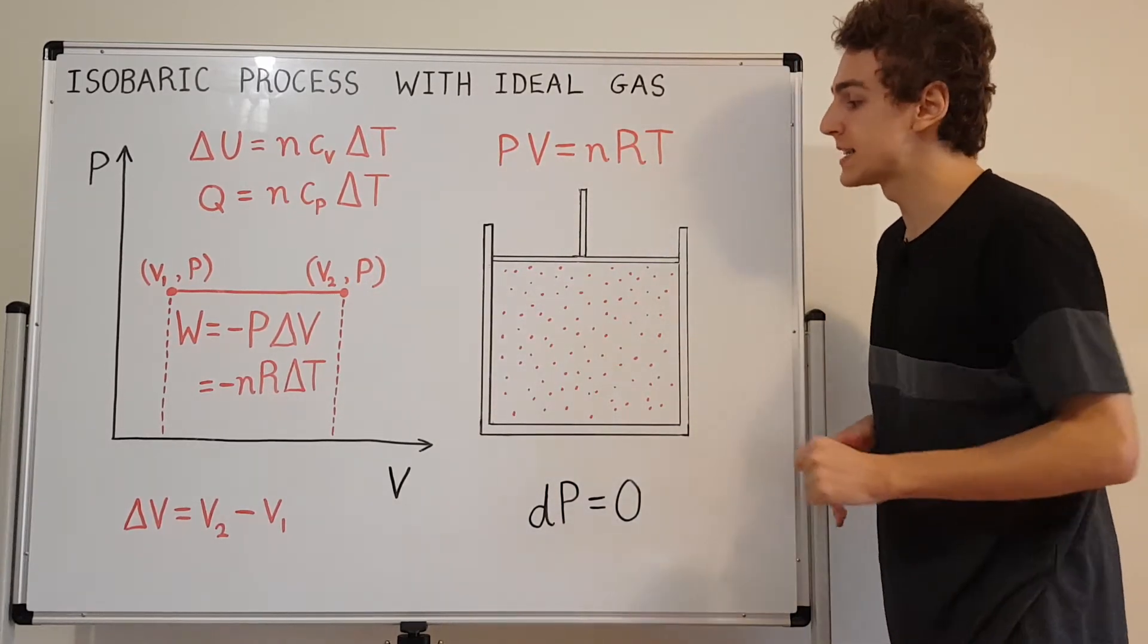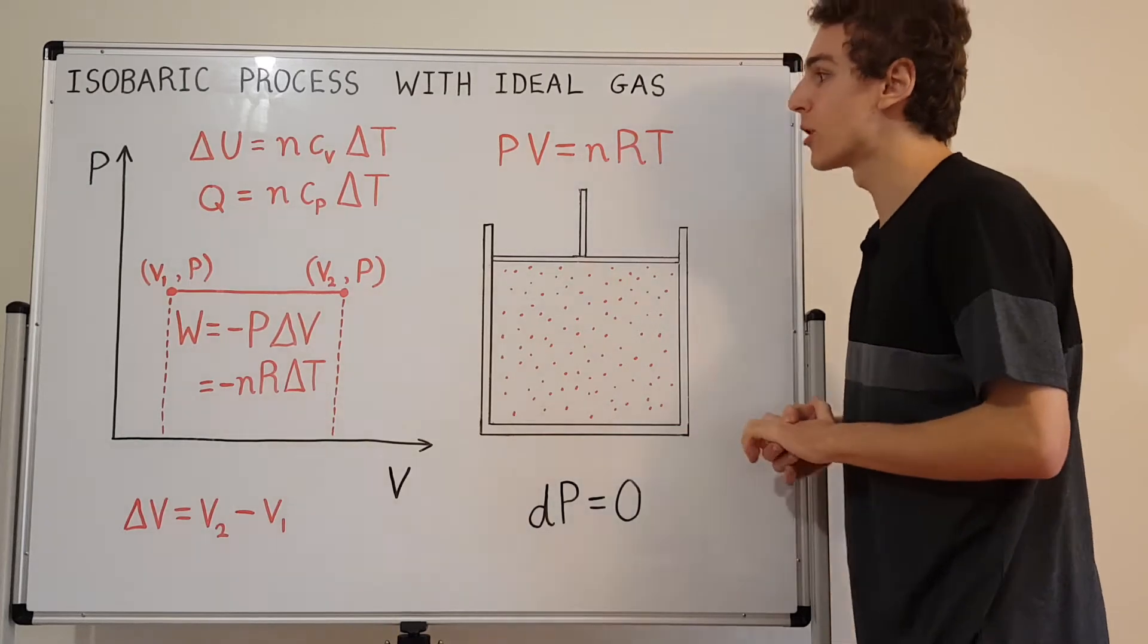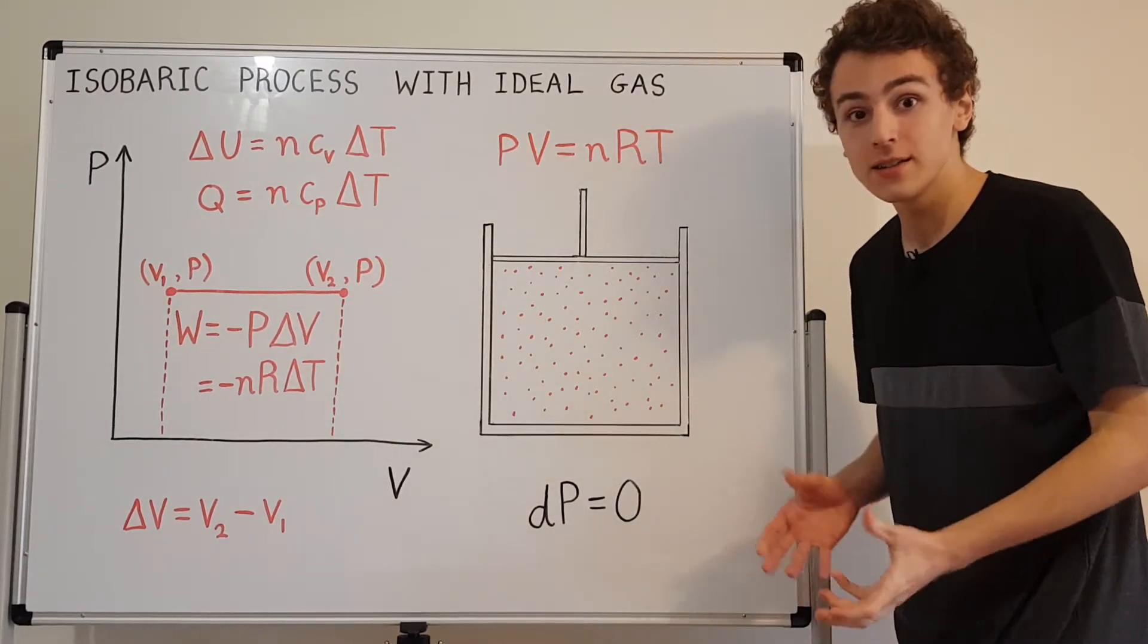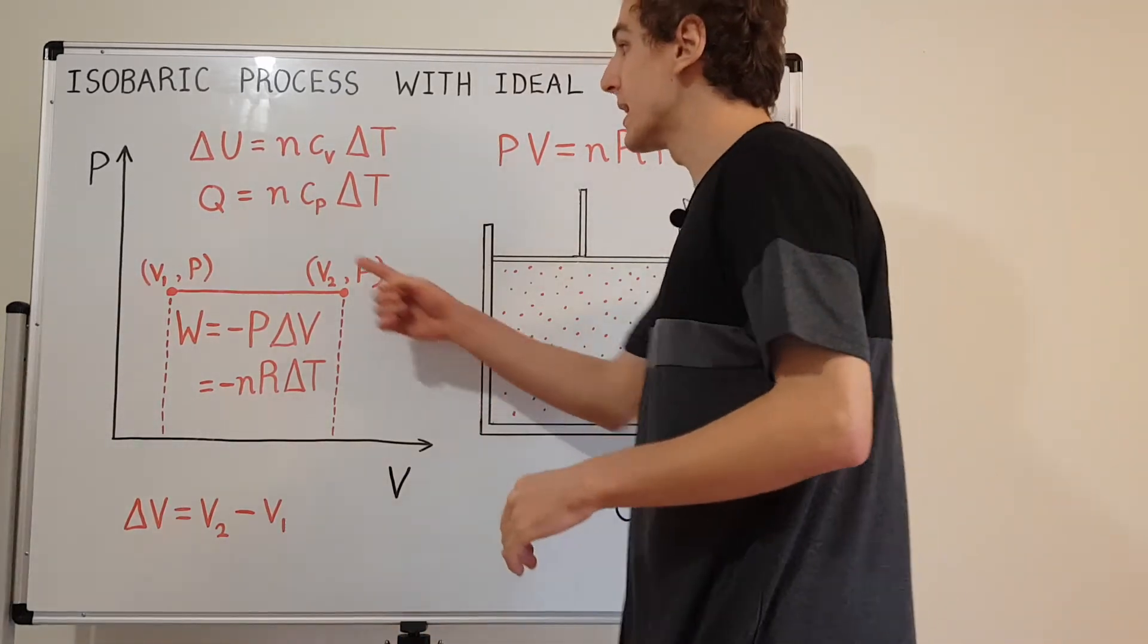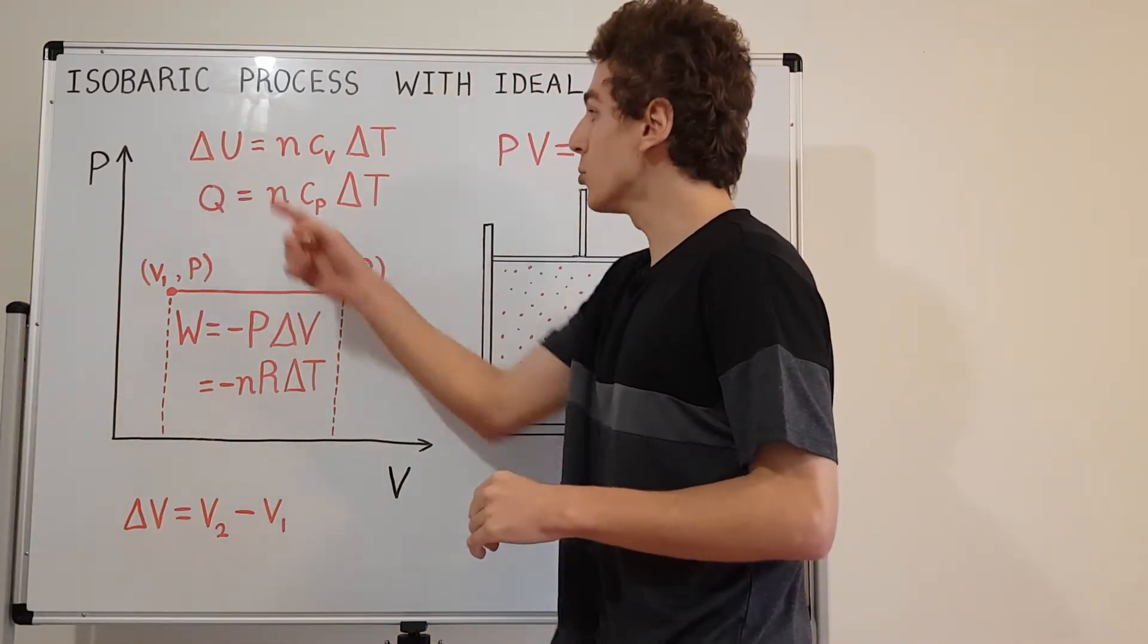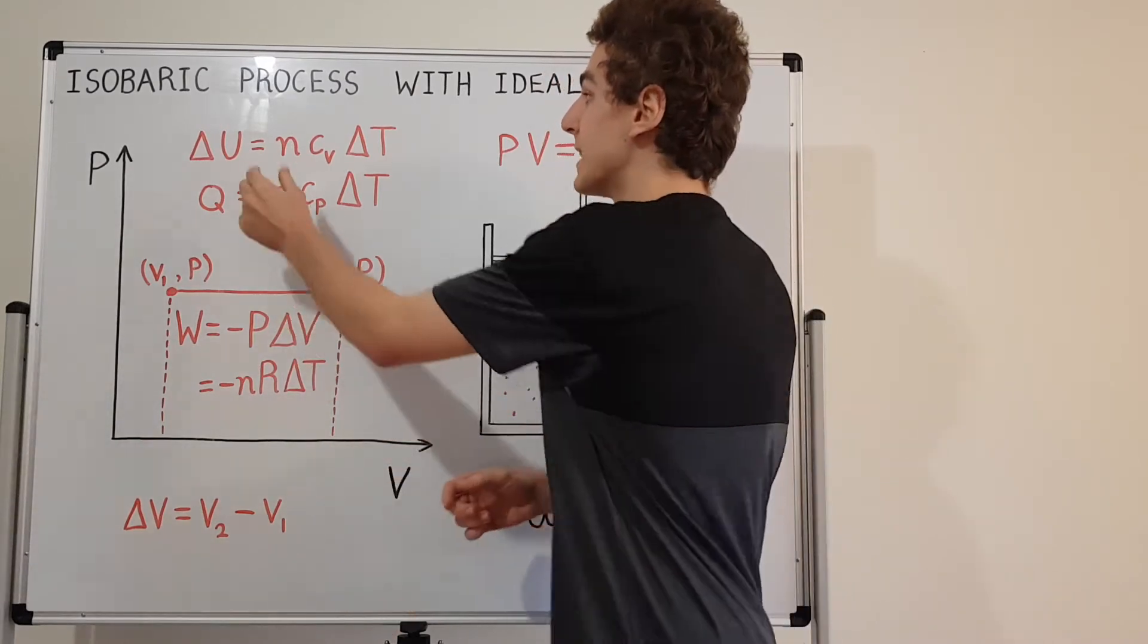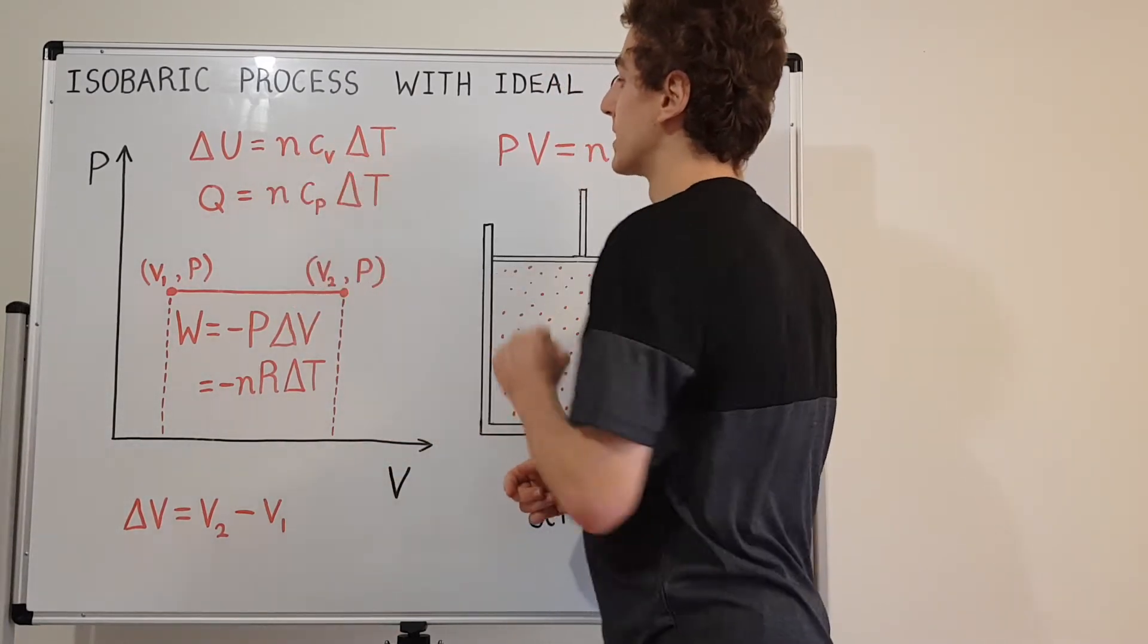So let's have a look at some relationships that can tell us more about what the internal energy is, what the heat is, and what the work is. So up here we've got the internal energy of the gas. And delta U, which is the change in internal energy, is given by n Cv delta T.